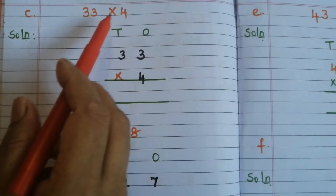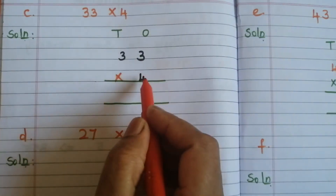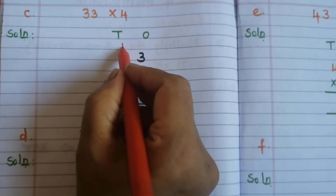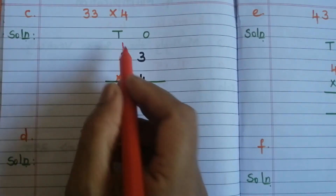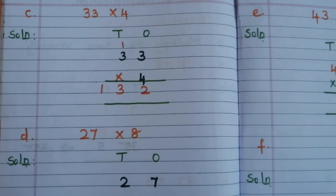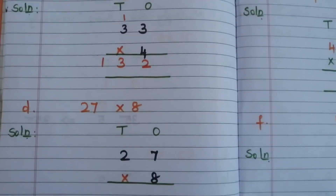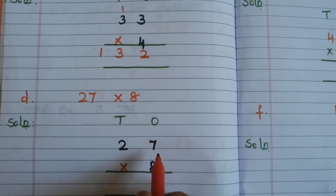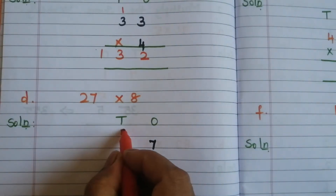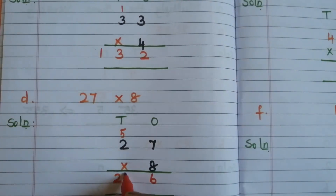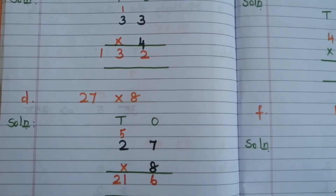C: 33 × 4 — 4 threes are 12, write 2 and carry over 1. 4 threes are 12, plus 1 = 13. Answer is 132. D: 27 × 8 — 8 sevens are 56, write 6 and carry over 5. 8 twos are 16, plus 5 = 21. Answer is 216.